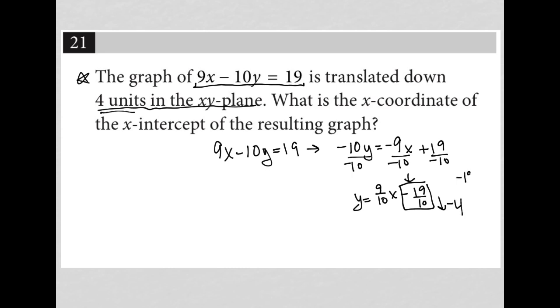So let's see, what is negative 19 tenths minus four? Well, that becomes four over one. I want it to have a common denominator of 10. So I'm going to multiply top and bottom by 10, which gives me 40 and 10 here. Negative 19 minus 40, negative 19 over 10 minus 40 over 10 is negative 59 over 10.